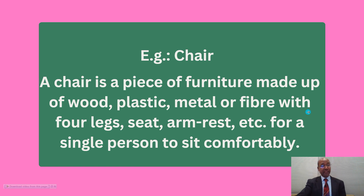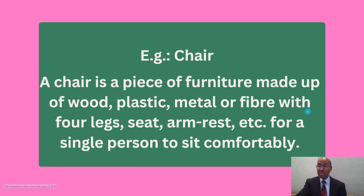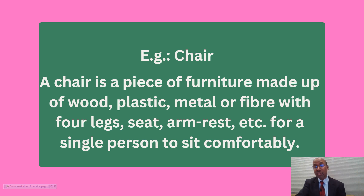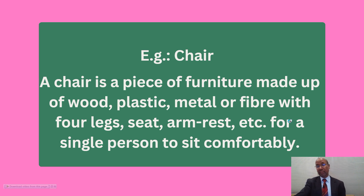Example — chair. A chair is a piece of furniture made up of wood, plastic, metal, or fiber, with four legs, seat, armrest, etc., for a single person to sit comfortably. So this is a possible definition.